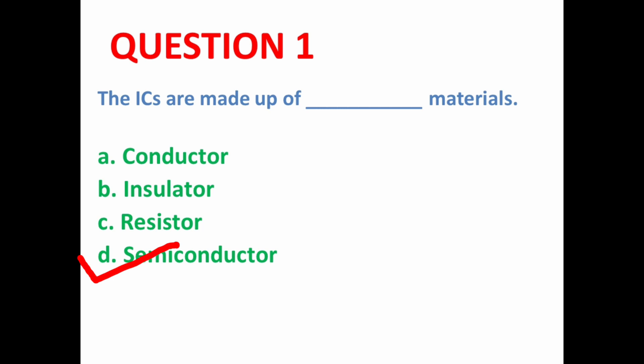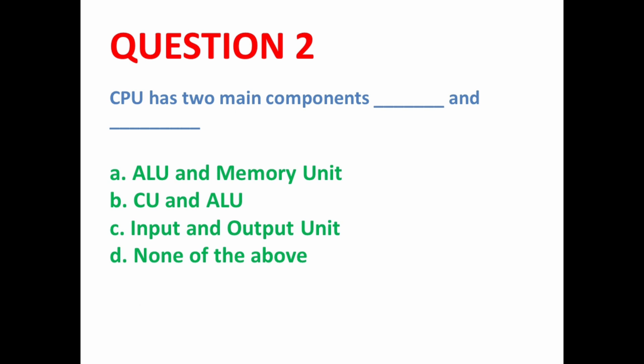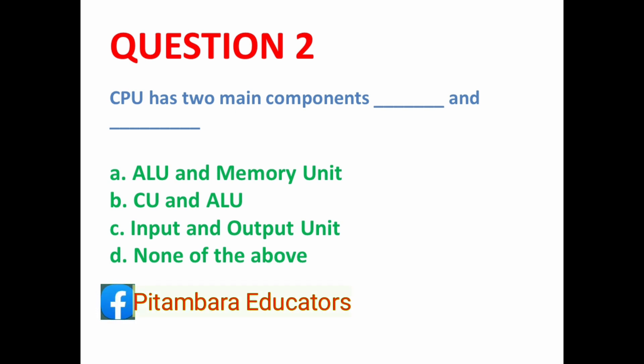Second MCQ: CPU has two main components — dash and dash. CPU is made up of two components, that is Control Unit and Arithmetic and Logic Unit. Their full forms are also important to know. Here option B is the correct option.